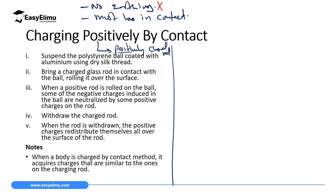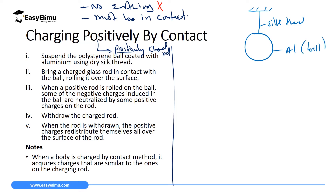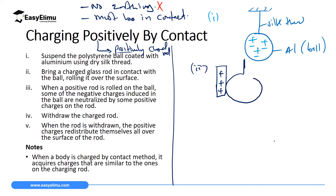How can we charge a neutral body positively by contact method? For us to charge a neutral body positively by contact method, we will suspend the body which we want to charge using a silk thread. This body is an aluminium ball. So we suspend the aluminium ball using a silk thread - this aluminium ball is neutral, meaning the number of protons is equal to the number of electrons. The second step is that we bring a positively charged rod in contact with the body which we have suspended.